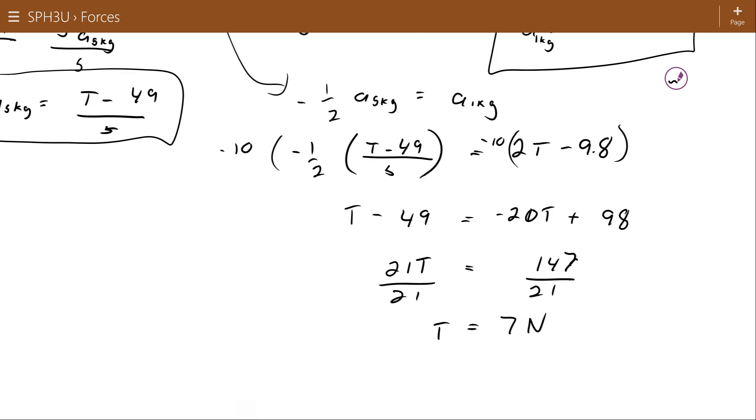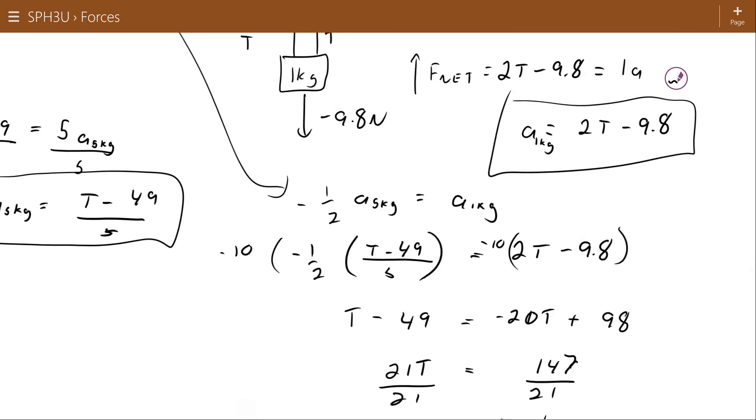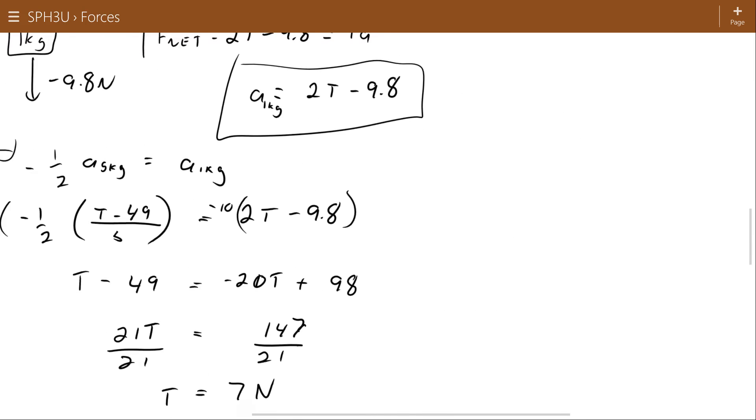Now, I can use this equation for acceleration to come up with the acceleration of the 1 kilogram block. 2 times that 7 newton force minus 9.8. And that's going to be keeping in mind that this is all divided by 1 kilogram. So that's how this is going to turn back into meters per second squared. 14 minus 9.8, or I'll get an acceleration of 4.2 meters per second squared.